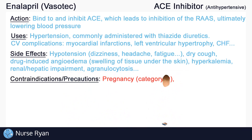Enalapril belongs to the FDA pregnancy category D. It is associated with increased fetal and neonatal morbidity and death, so it should not be used during pregnancy. Enalapril should also be avoided during breastfeeding, as it has been detected in breast milk. Also avoid enalapril in patients with a history of ACE-induced angioedema or ACE-inhibitor hypersensitivity.